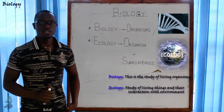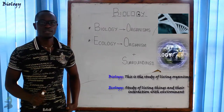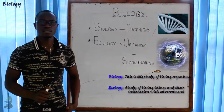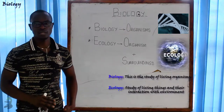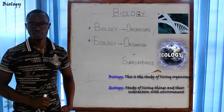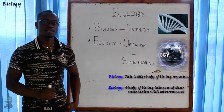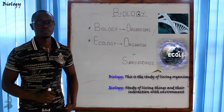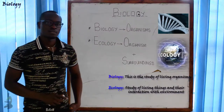So to summarize: ecology is the study of living things and their interaction with the environment. Biology, on the other hand, is the study of only living things. Biology is the study of living things or living organisms; ecology is the study of living things and their surrounding.